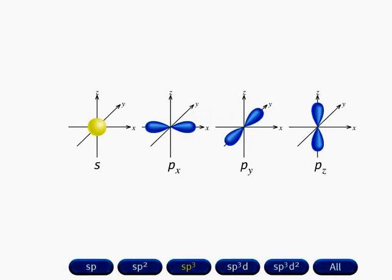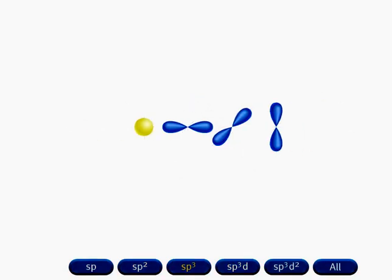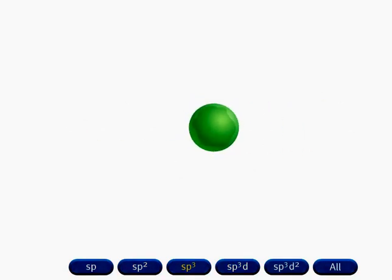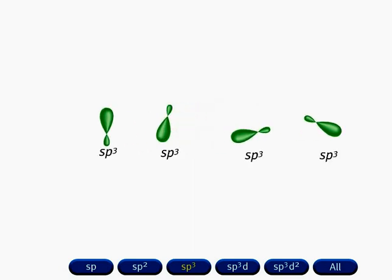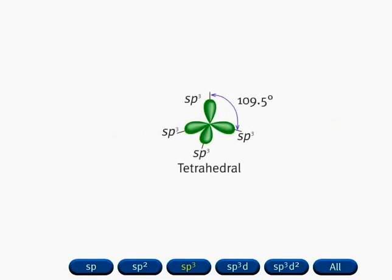Mixing an s orbital with the three p orbitals generates four equivalent sp³ hybrid orbitals. Note that the number of hybrid orbitals produced is equal to the number of atomic orbitals that are hybridized. The set of four sp³ hybrid orbitals has a tetrahedral arrangement, and the angles between the orbitals are 109.5 degrees.